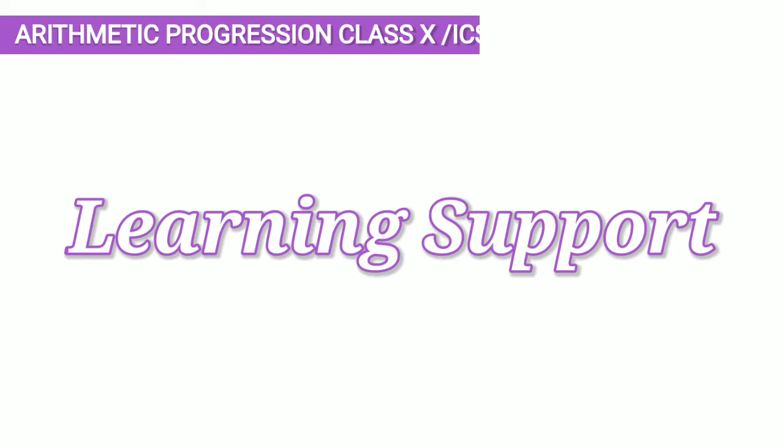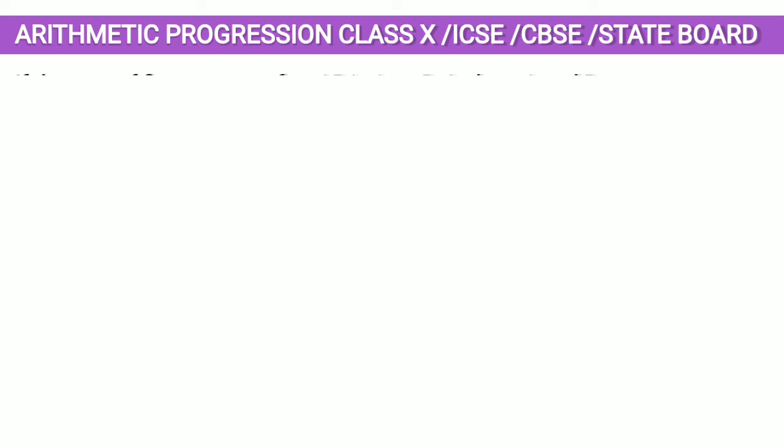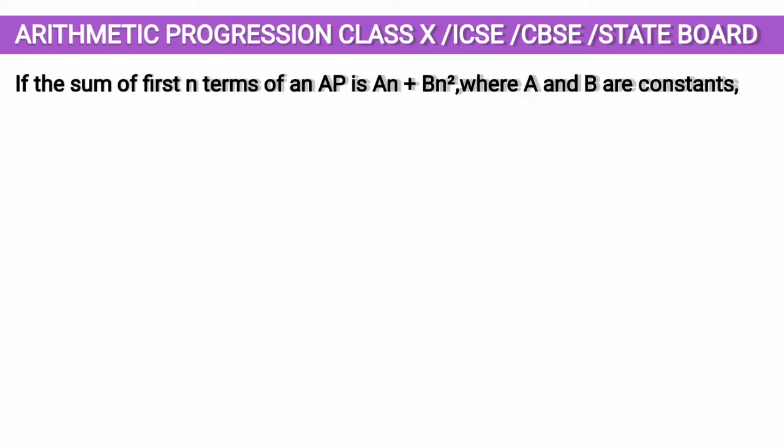Hello friends, let us solve one MCQ question from chapter arithmetic progression for class 10 students of ICSE, CBSE, and state board. The question is: if the sum of first n terms of an AP is An + Bn² where A and B are constants, the common difference will be. We are given four options and we have to select the correct one.